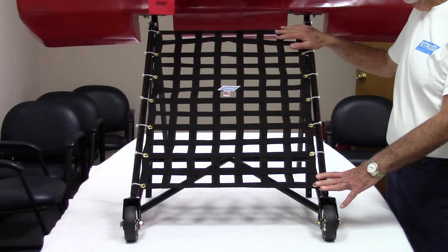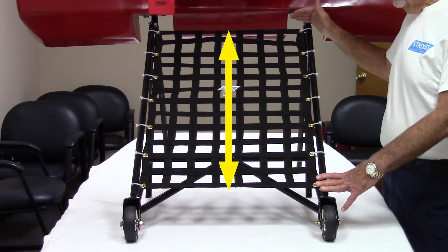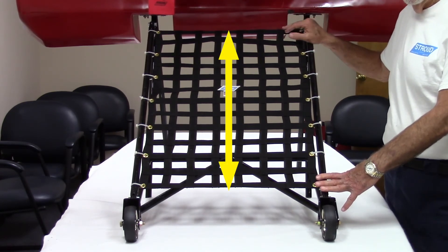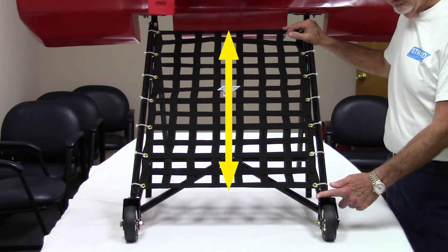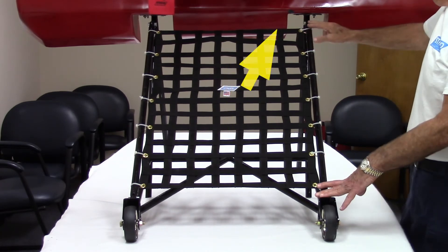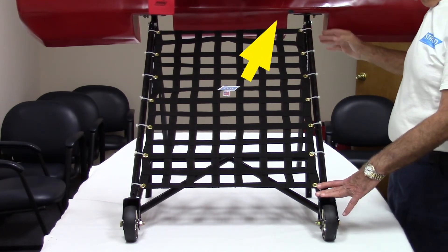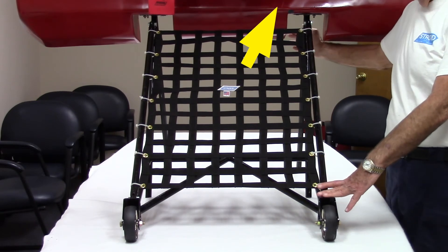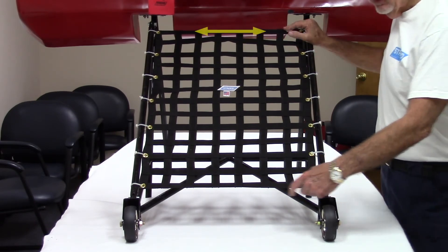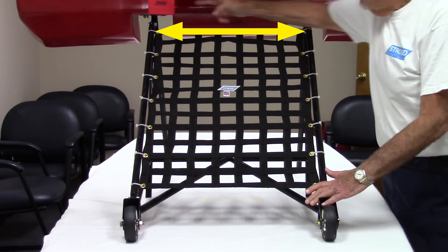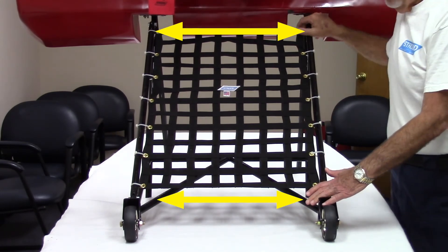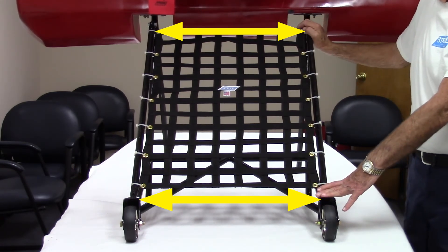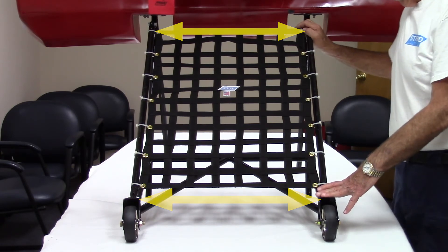To measure a wheelie bar net for a dragster, get the center line length dimension from where the bar attaches to the vehicle to the end of the tubes before the wheels. On a car with a body, add a foot of length under the vehicle beyond the lower edge of the body. We also need the inside width between the tubes at the top and the bottom of the wheelie bar. Be sure to indicate which of these measurements is the top and bottom.